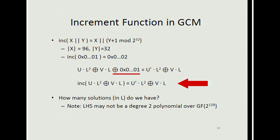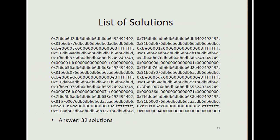I'd like to introduce the increment function used in GCM. It takes a 128-bit string where X is 96 bits and Y is 32 bits: the most significant 96 bits are unchanged, and the least significant 32 bits are incremented by 1 modulo 2^32. If I replace X₁ by inc(X₁) — the increment function — and ask the same question, the left-hand side may not be a degree-2 polynomial over GF(2^128). We can verify that there are in fact 32 solutions.